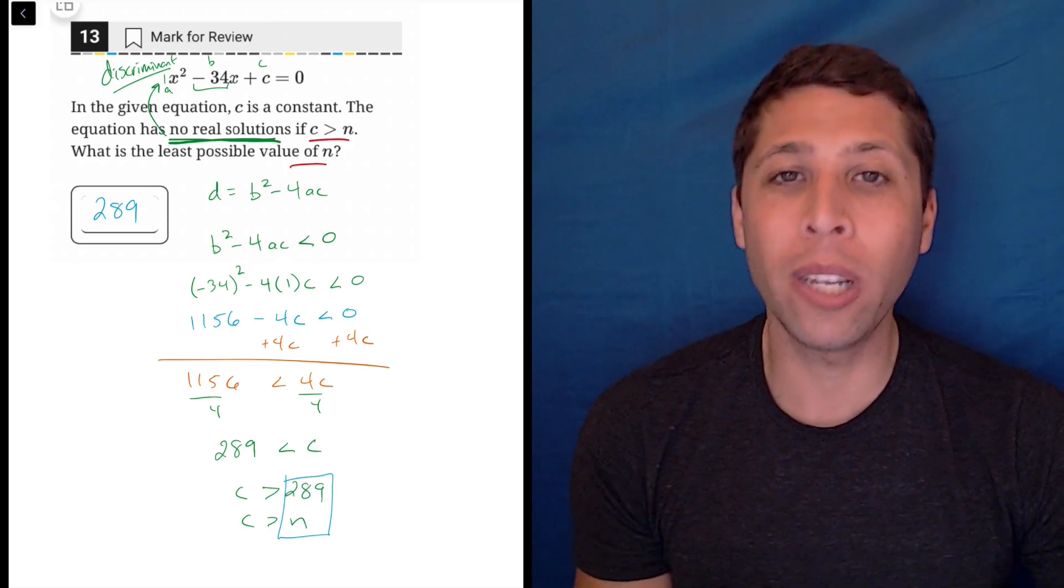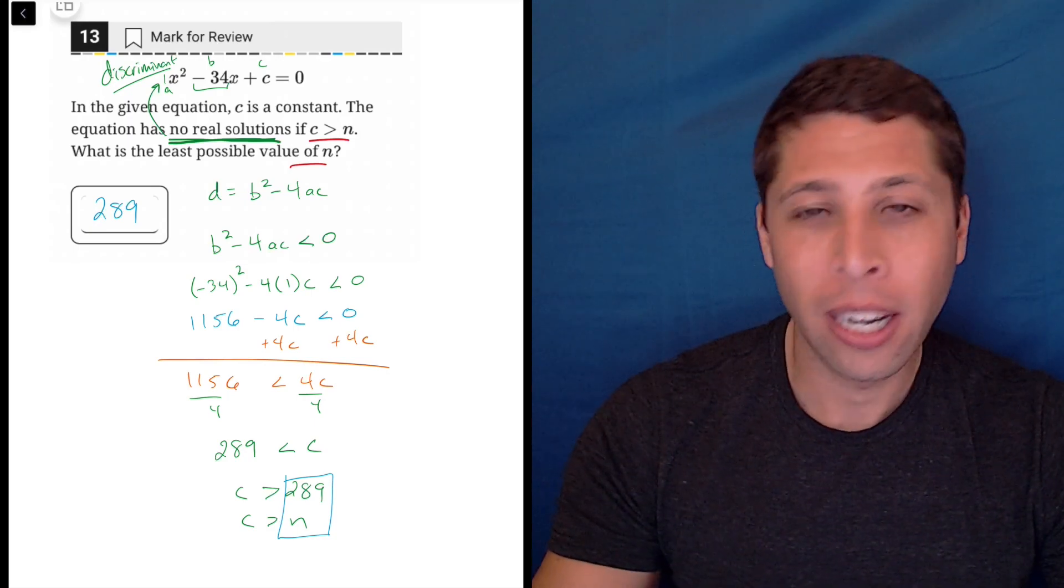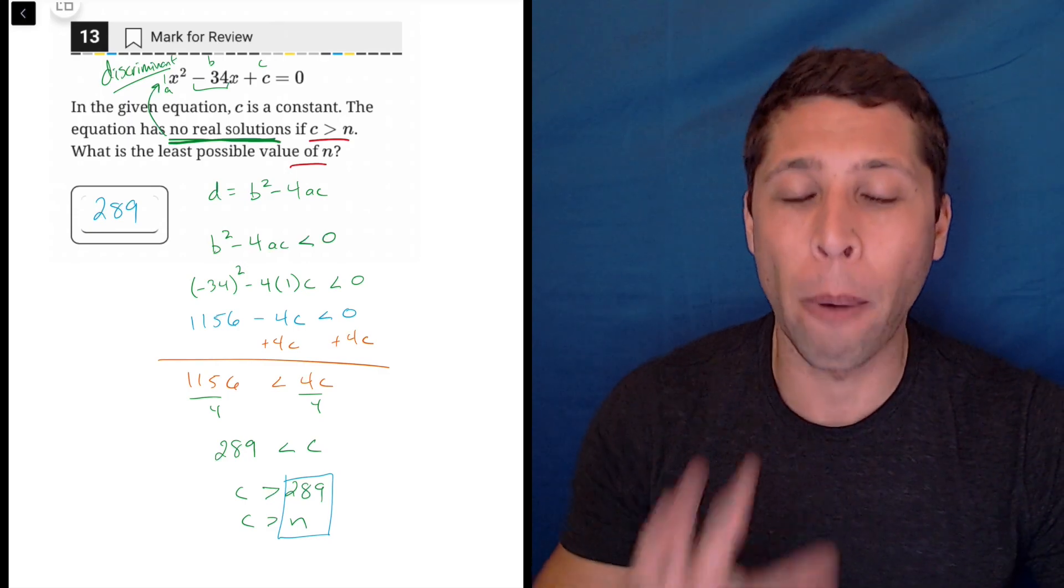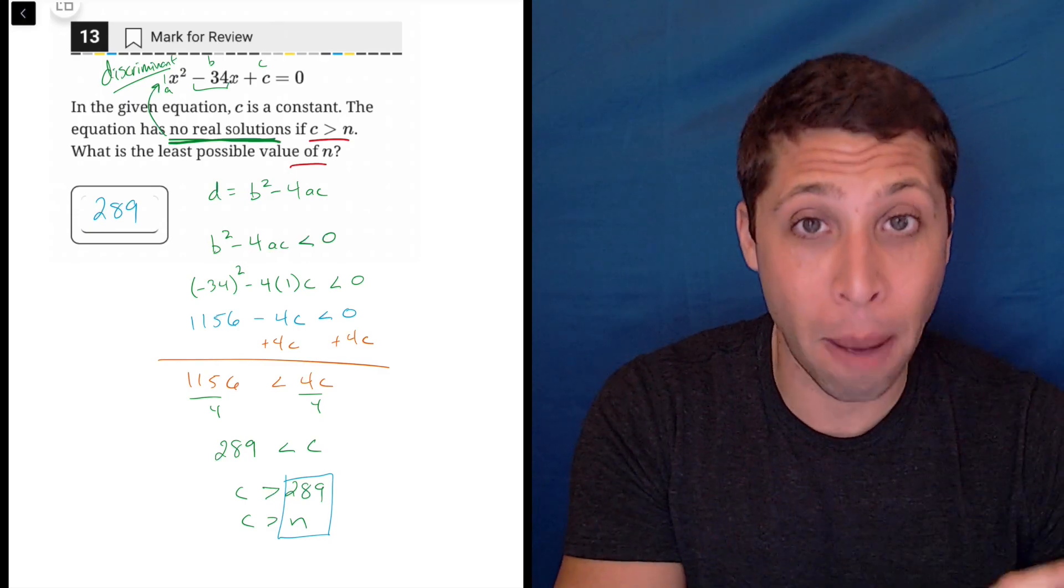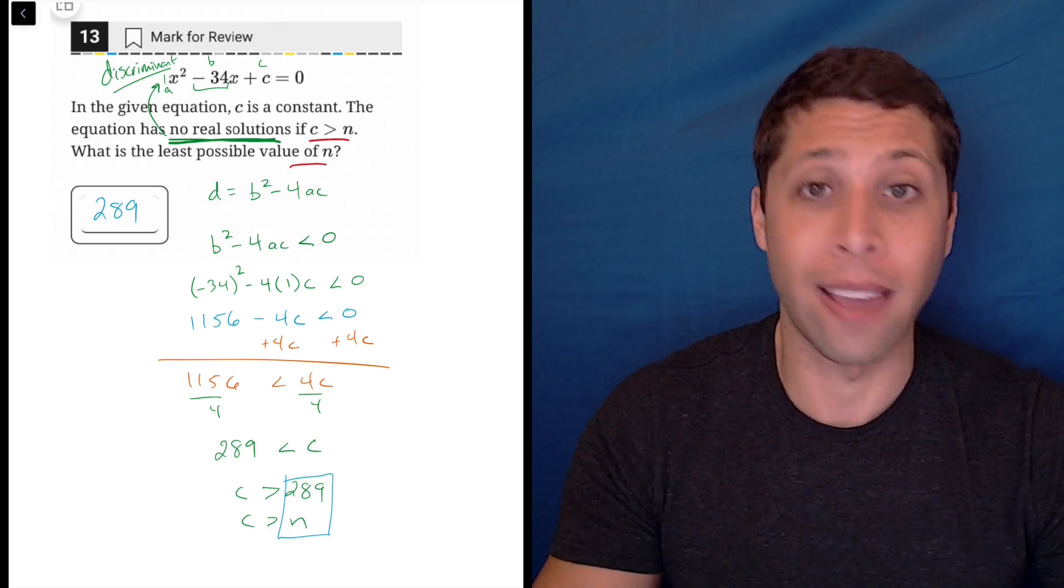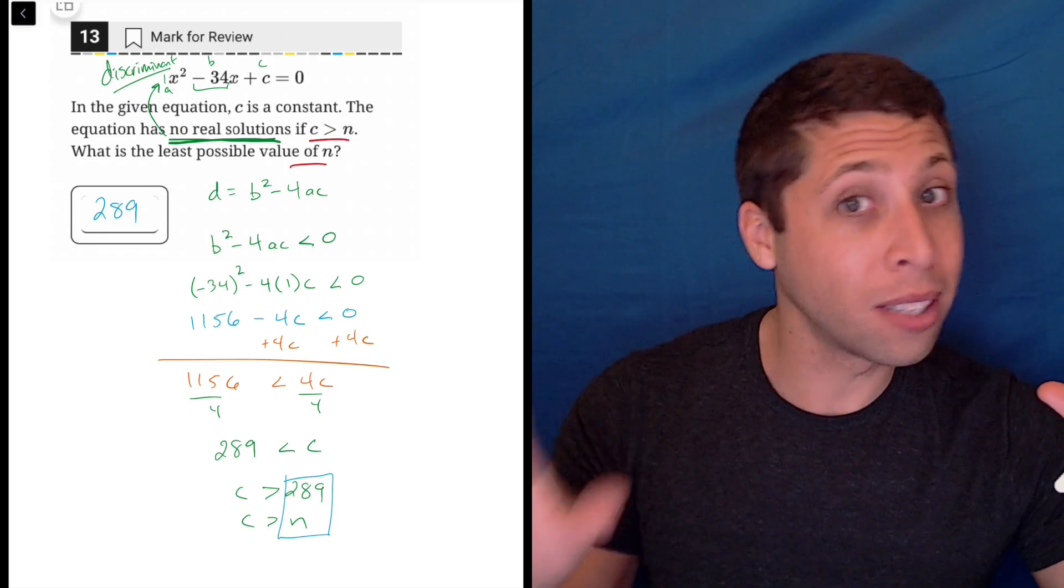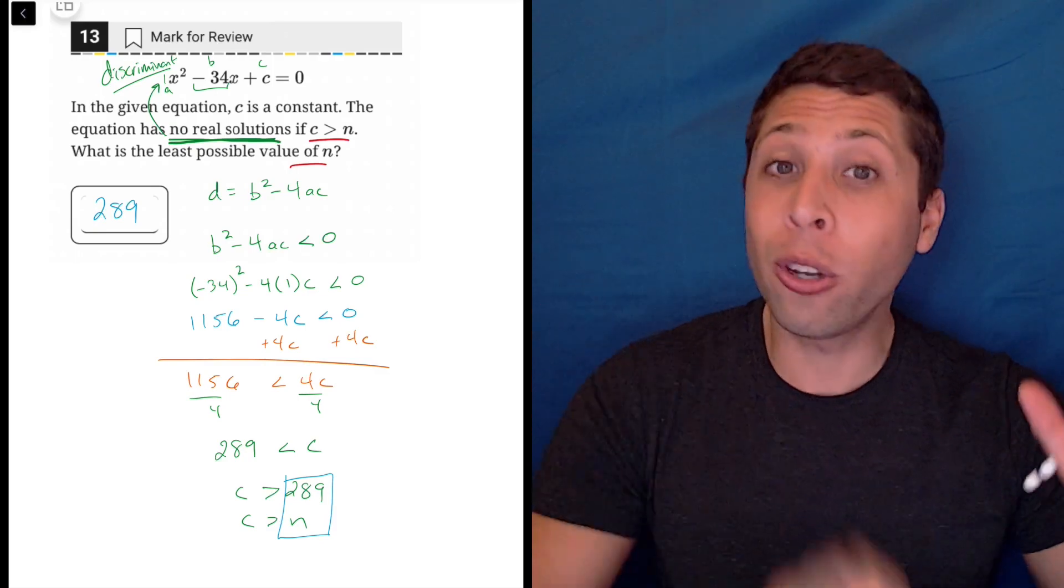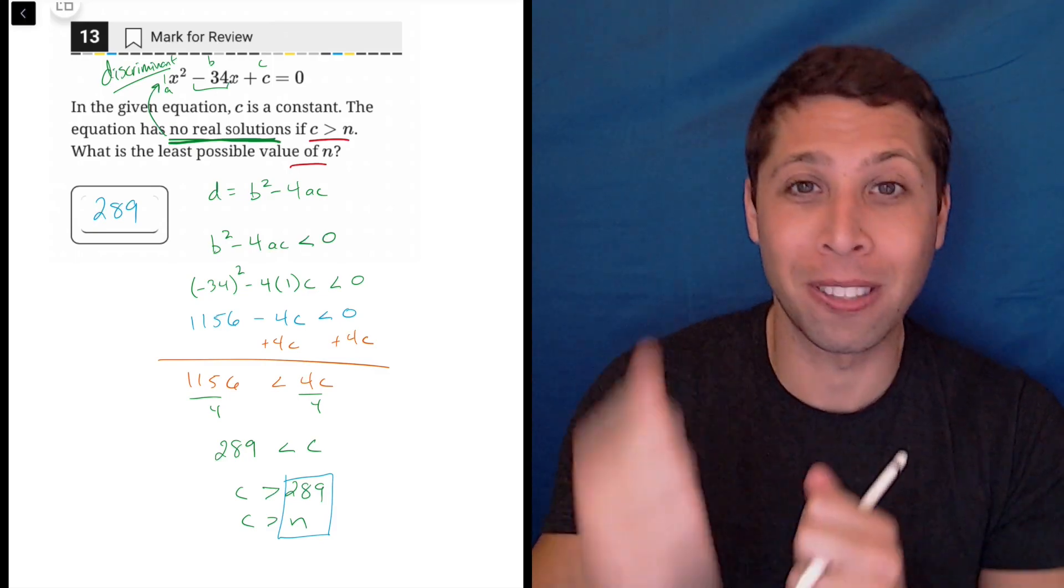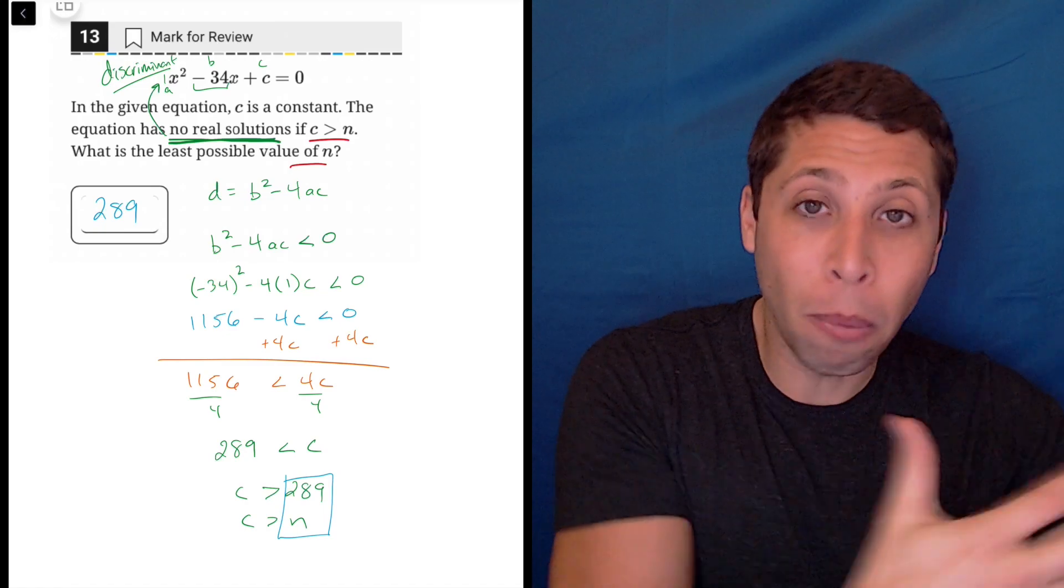I figured, you know what? This n thing is weird, but I'll worry about it later. I know what to do for now. I'm not going to let the n piece stop me from starting. And that's a very good idea on the SAT is you don't need to know step five before you've done step one. If you know step one, do it. It's probably going to tell you something about step two and step three. And so it's okay to kind of stumble your way to the answer.